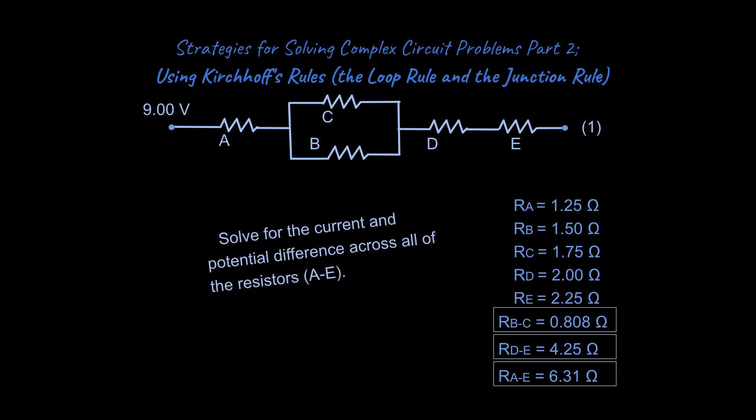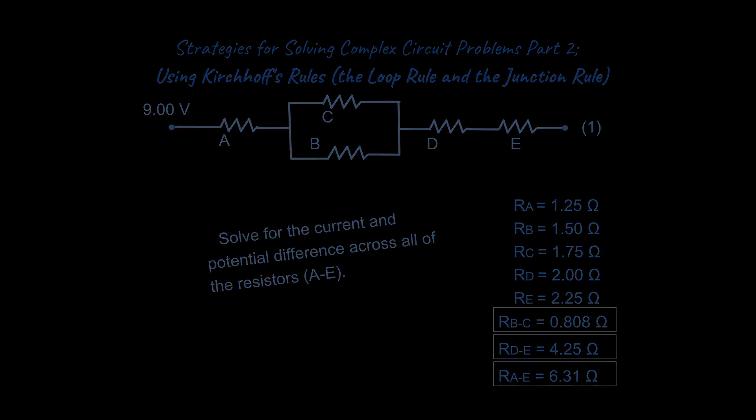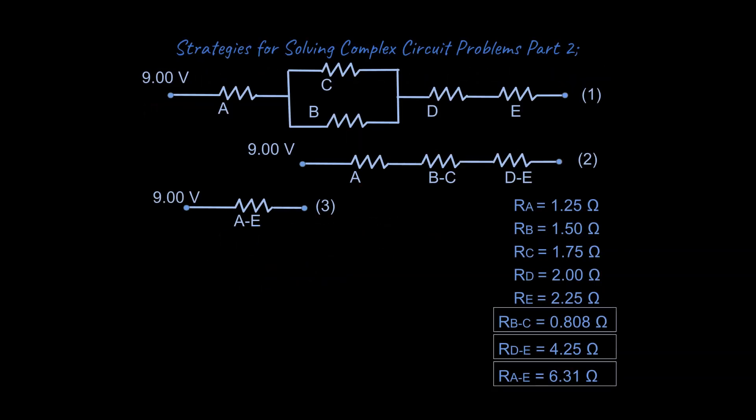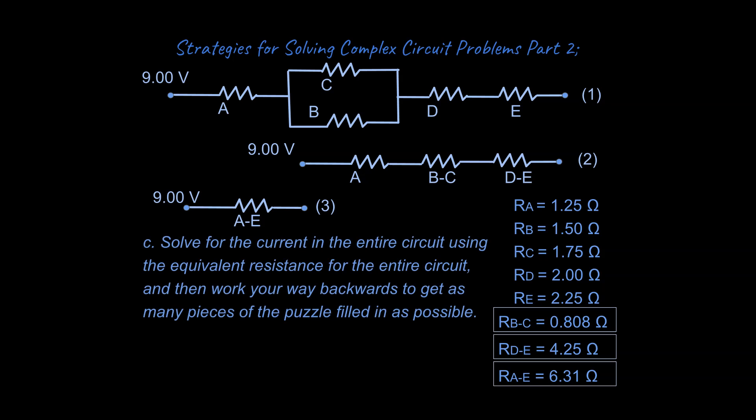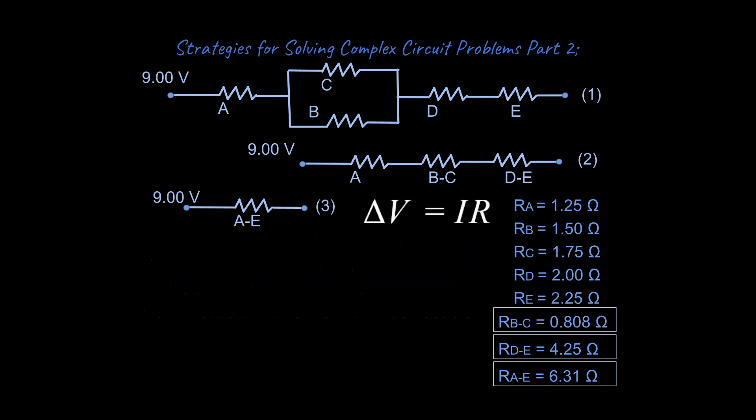So pretty straightforward, and I'm going to show you how to solve that today. So the problem that we have says solve for the current and the potential difference across all of the resistors, A through E. And what we can start to do is think about our previous work. Our previous work, we had broken this down into equivalent circuits. If you go from step one to step two to step three, as you get higher in number, it's a more summarized form, but you can still get information as you go from one to two to three and then work backwards. That's what we're going to be doing here.